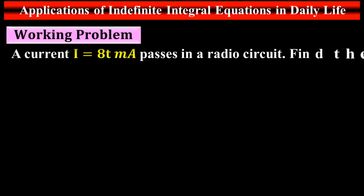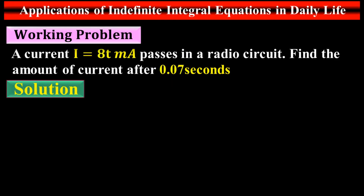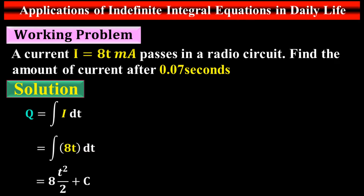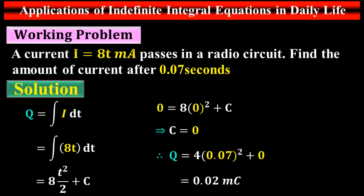Working problem: A current i = 8t milliamperes passes in a radio circuit. Find the amount of charge after 0.07 seconds. Solution: charge equals the integral of current, so Q = integral of 8t dt = 8t²/2 + C = 4t² + C. Initially Q = 0 at t = 0, so C = 0. Substituting t = 0.07 gives Q = 0.02 millicoulombs — this is the total charge after 0.07 seconds.